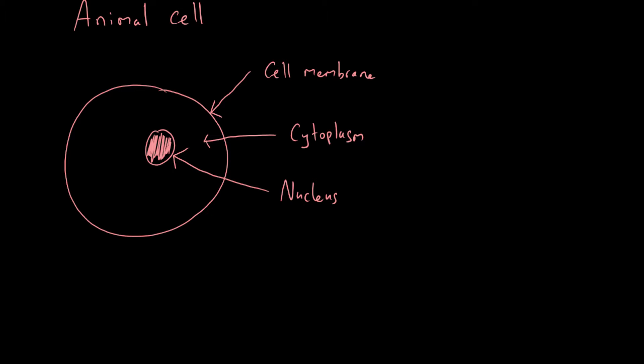The cell membrane basically controls the passage of things going into and out of the cell - it lets certain things in and keeps other things out. The cytoplasm is where the chemical reactions take place in the cell. Think of it like the solution in a test tube - it's where things are going to happen.